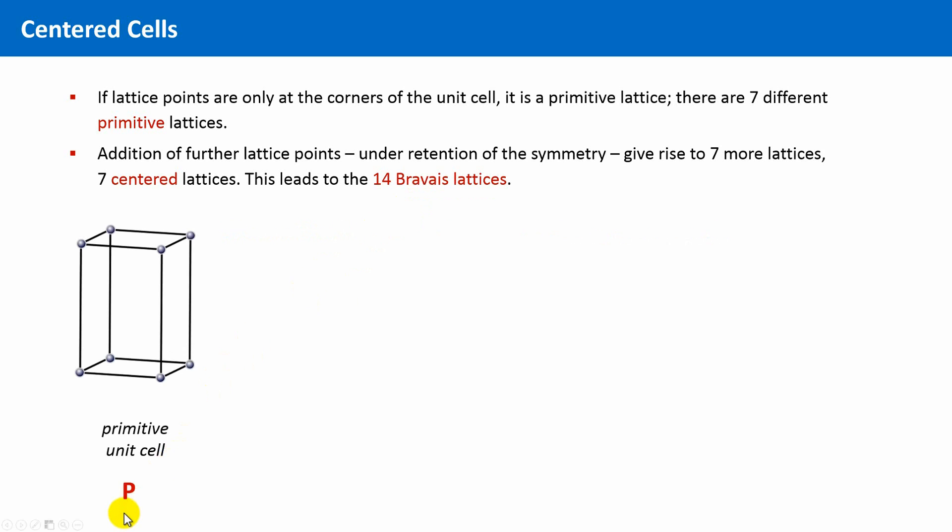The primitive unit cell corresponds to no centering, it is not centered. The next possibility is that there is one additional lattice point at one face of the unit cell. Conventionally, it is the C-face, that is the plane spanned by the A and B lattice vectors. It also can be the A or B-face in a non-conventional setting.